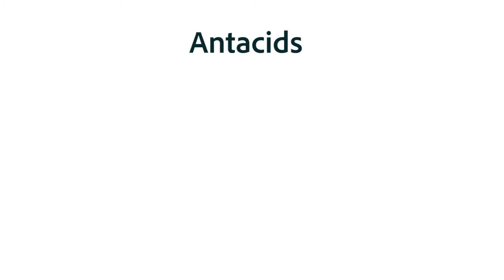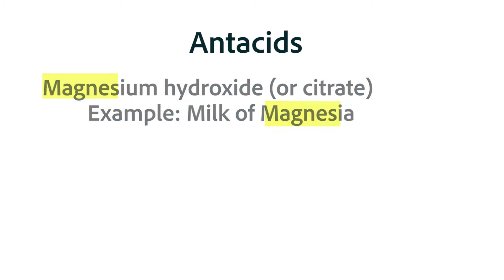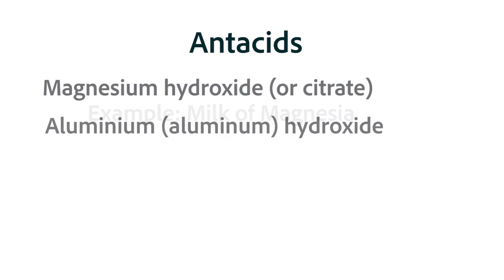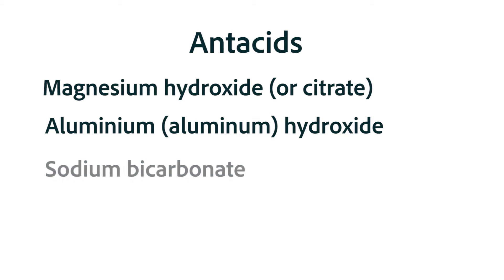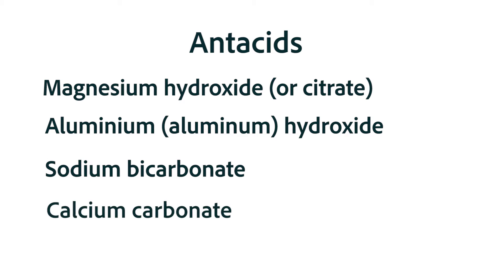Welcome back as we use the most common types of antacids to learn about them and other medications. There are four major types of antacids: magnesium hydroxide or citrate, aluminum or aluminum hydroxide, sodium bicarbonate, and calcium carbonate.